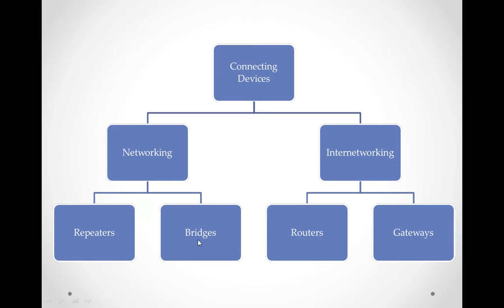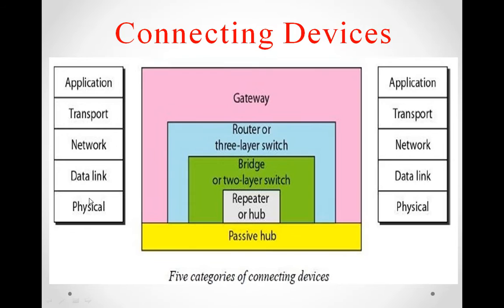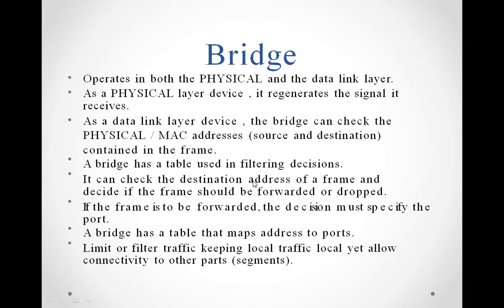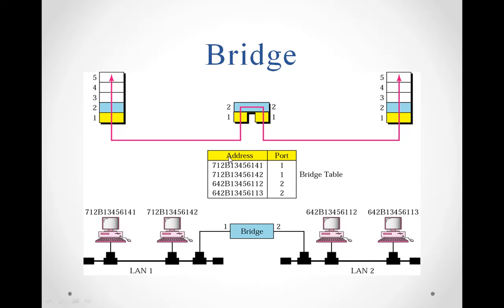Bridges operate at the physical and the data link layer, which is why bridges are called two-layer switches. Bridges have the provision of regeneration of signals received from the source computer before transferring to the next computer system. The data link layer transfers messages in the form of frames and deals with physical addressing, so bridges connect different computer systems using their physical addresses.